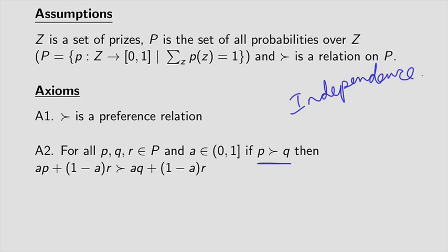So with probability A, you're going to play P. And with probability 1 minus A, you're going to play some other lottery R. I don't know what that lottery is, but it's just some other lottery R. And you want to compare that to, with probability A, you play lottery Q. And with 1 minus A, you play lottery R.